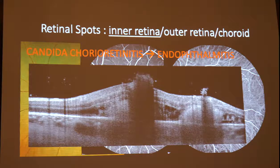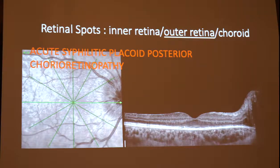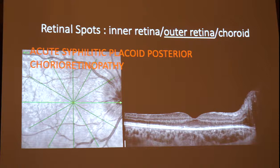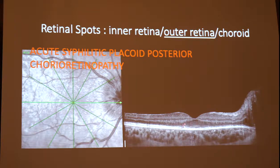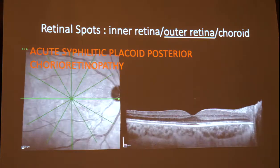On the other hand, some retinal spots are characterized by marked outer retinal inflammation. In the patient with syphilitic placoid chorioretinopathy shown earlier, there is marked disruption of the outer retina — the inner retina is fine, the choroid is fine — but there is absence and irregularity of the ellipsoid zone and the external limiting membrane, which nicely regressed with antibiotic treatment.